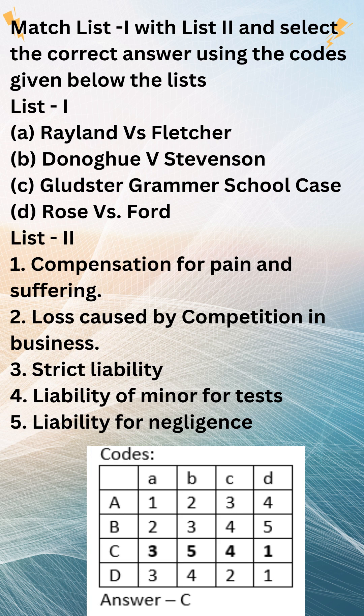Rylands v. Fletcher is a landmark case in English tort law, establishing the rule of strict liability for non-natural uses of land. It was decided by the House of Lords in 1868. In the case, the defendant, Rylands, employed contractors to build a reservoir on his land.